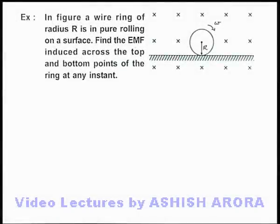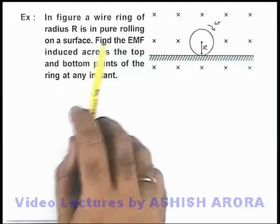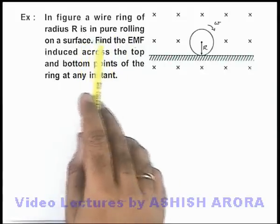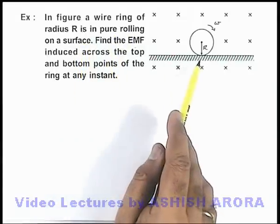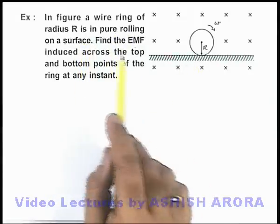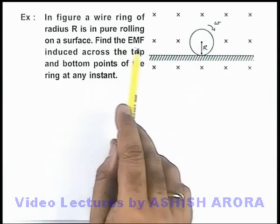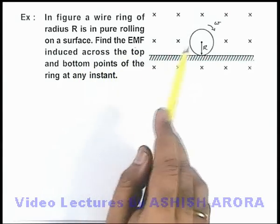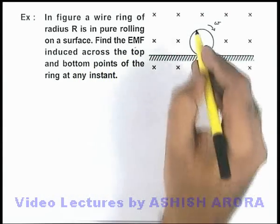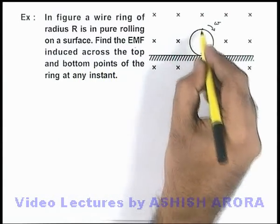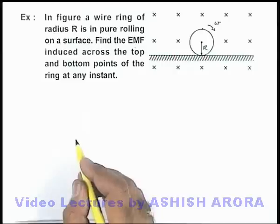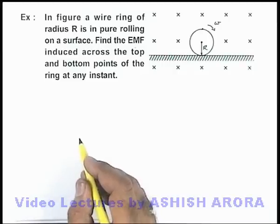In this example, in figure a wire ring of radius r is in pure rolling on a surface. We are required to find the EMF induced across the top and bottom points of the ring at any instant of time.